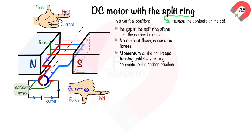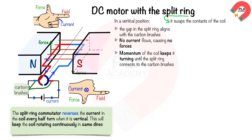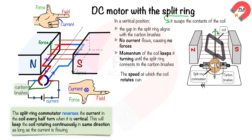As a result, the coil will continue to rotate in the same direction. So the split ring commutator reverses the direction of the current in the coil every half turn when it is vertical. This will keep the coil rotating continuously in the same direction as long as the current is flowing.